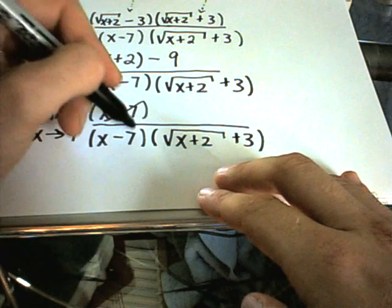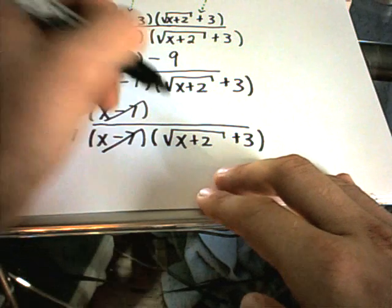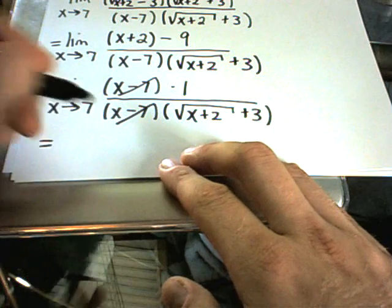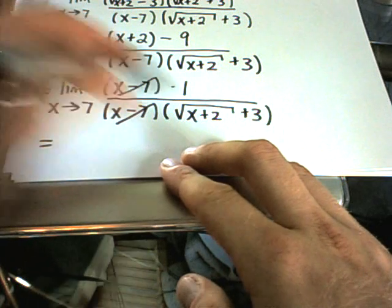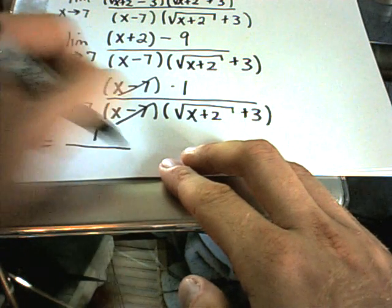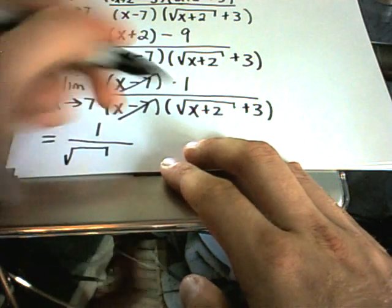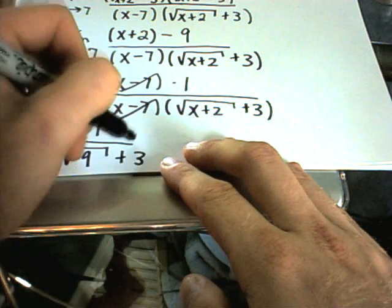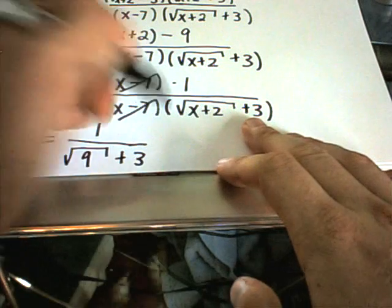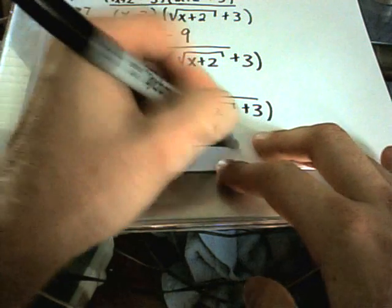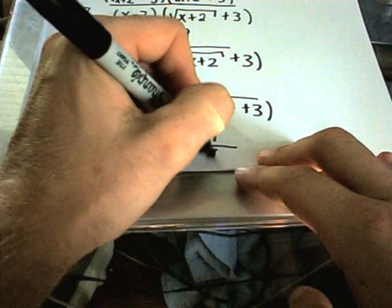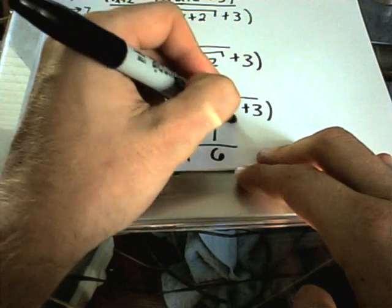I can cancel out the x - 7 terms. You can think of there being a 1 left on top. Now I'm going to plug 7 in. I'll get 1 over the square root of 7 + 2, which is 9, and I'll add 3 to that. So I have 1 over √9, which is 3, plus 3, which is 6. That's my answer.